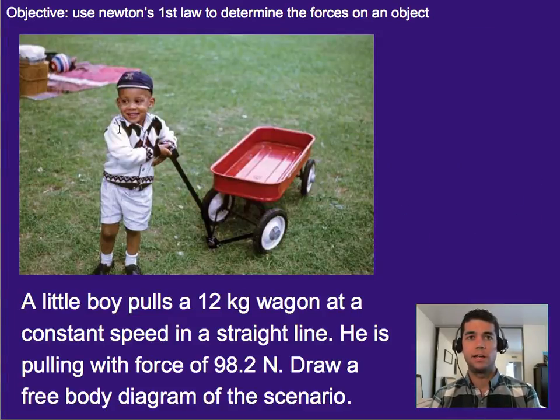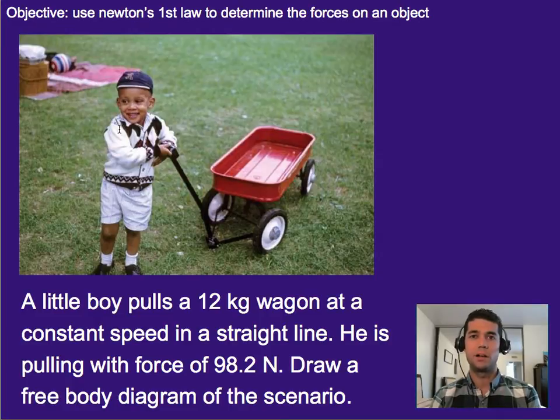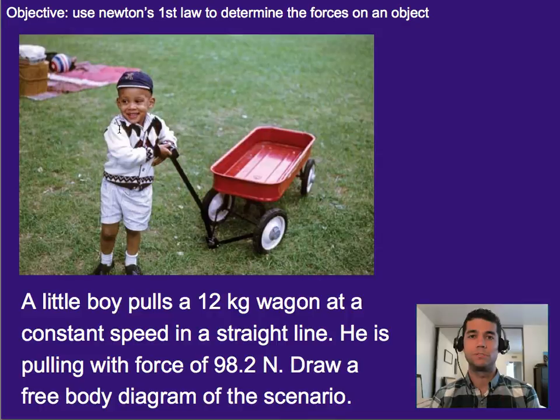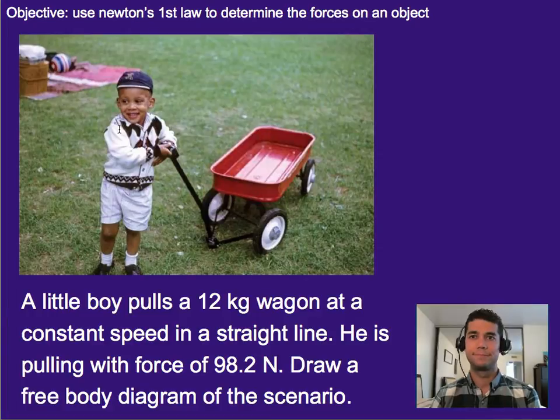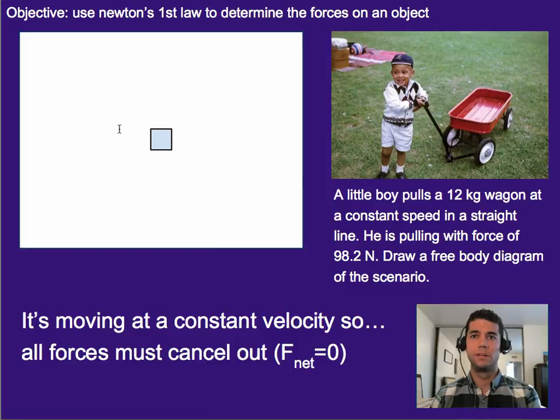Let's do another practice. In this one, a little boy pulls a 12 kilogram wagon at a constant speed in a straight line. He's pulling with a force of 98.2 N. Go ahead and draw a free body diagram to describe this scenario. Again, pause the video, give it a shot, please. Okay, let's go through this. So the boy's moving at a constant velocity. That means there is no acceleration, which means the net force must be zero. So let's figure out what those forces might be. First, we know since it's on Earth, there's the force of weight on the wagon pulling it down. That's 120 N. But it's not falling, so we know there must be some force from the ground preventing it. That's the normal force in this case.